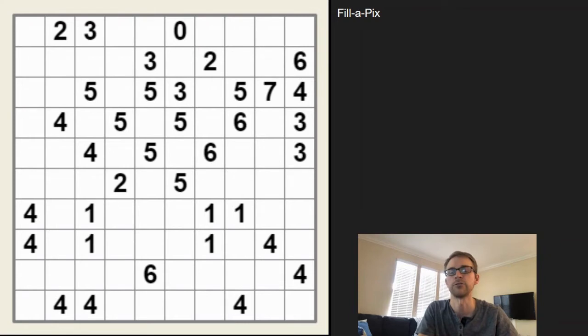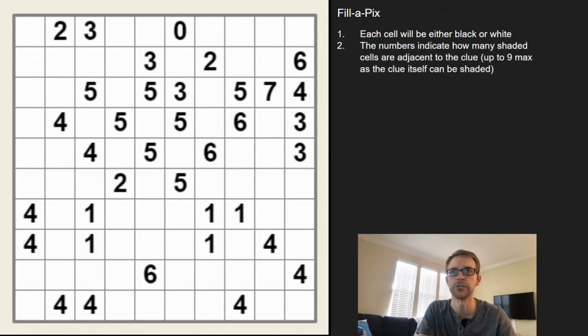puzzles out there. What I'll do is solve an example puzzle for you so you can see kind of how it unravels. It reminds me a lot of Minesweeper. Each cell is going to be filled in with black or white or unshaded. The numbers in the cells indicate how many shaded cells are adjacent to that clue, up to a nine maximum. The clue itself can be shaded in, so that's what's different from Minesweeper.